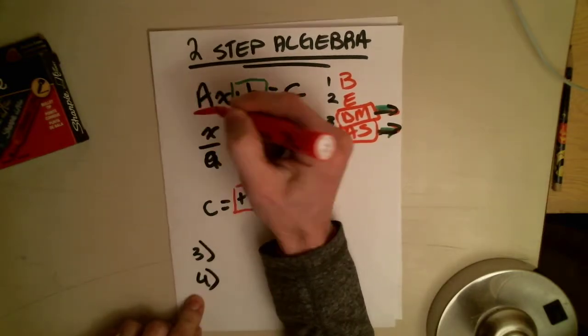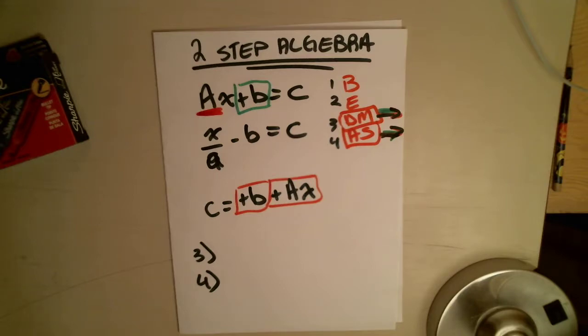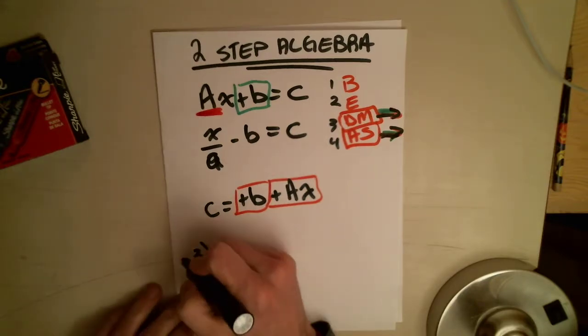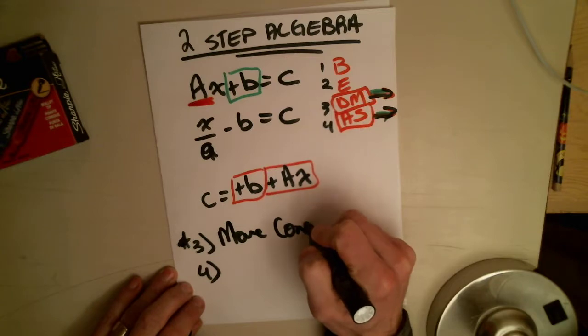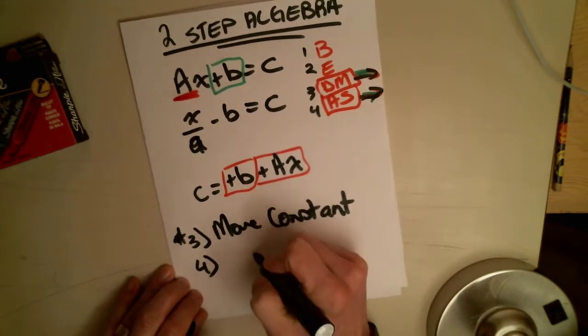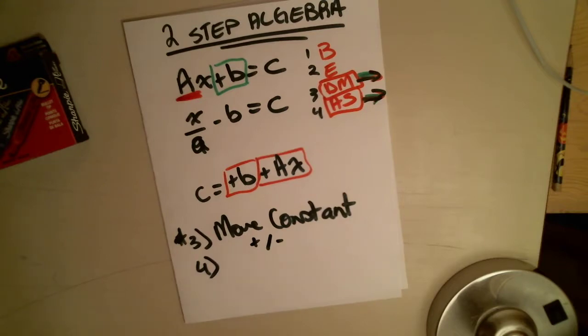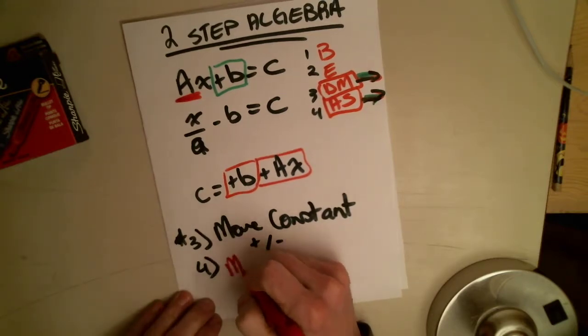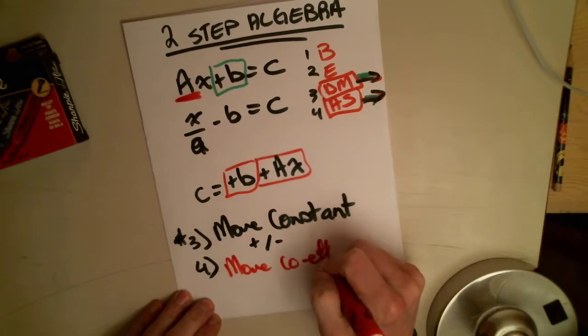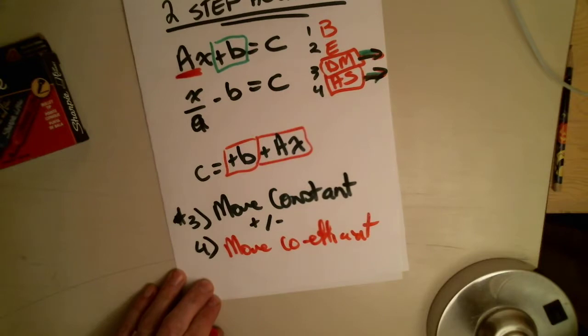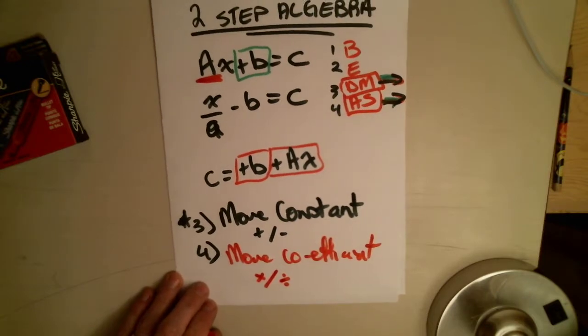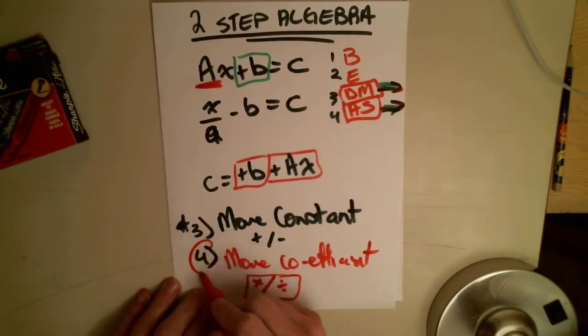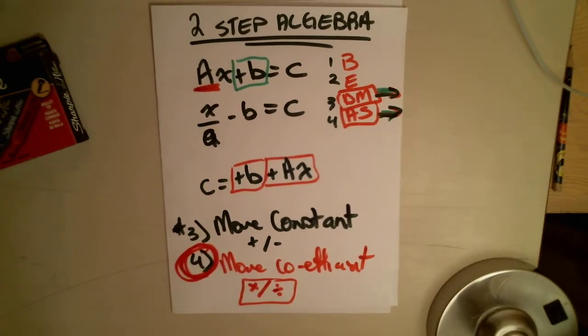Our coefficient is the number that's attached to the x with either a multiply or a divide. So the first step that you're concerned on is number three. Number three is move constant away from x using addition or subtraction. All right. Rule number four is move the coefficient away from x using multiply or divide. The only time we ever use multiply or divide is in the very last step. Everything else is just using the opposite operation.